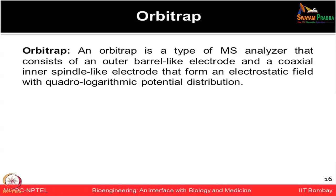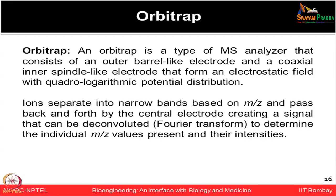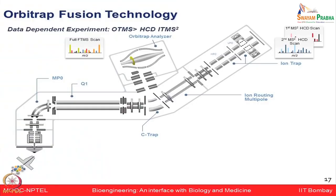The Orbitrap is a type of mass analyzer consisting of an outer barrel-like electrode and a coaxial inner spindle-like electrode that form an electrostatic field with quadro-logarithmic potential distribution. Ions separate into narrow bands based on mass-to-charge ratio, passing back and forth by the central electrode, creating a signal that can be deconvoluted to determine individual mass-to-charge values and their intensities. The Orbitrap Fusion tribrid technology combines quadrupoles, ion traps, and Orbitraps—each with their own detectors—providing highest resolution and multiple fragmentation capabilities for diverse applications.